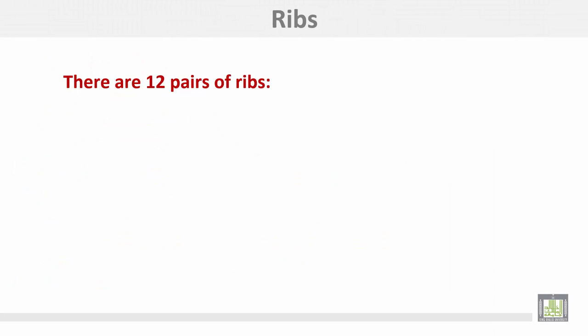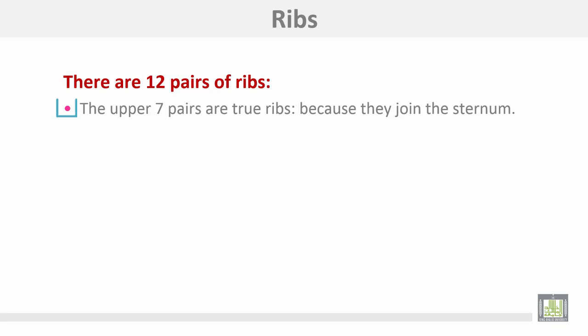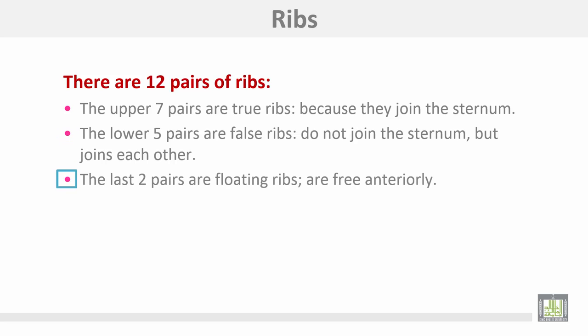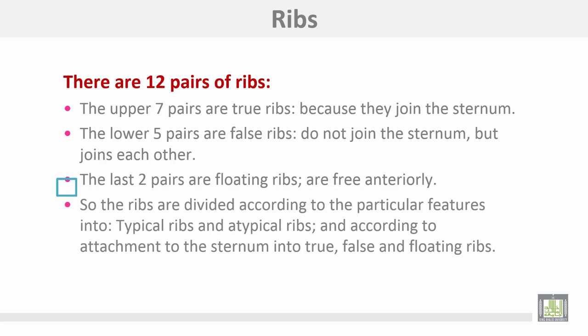There are 12 pairs of ribs. The upper seven pairs are true ribs because they join the sternum. The lower five pairs are false ribs — they don't join the sternum directly but join each other. The last two pairs are floating ribs, which are free anteriorly. Ribs are also classified into typical and atypical ribs based on their features.